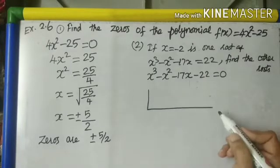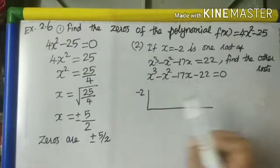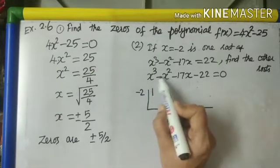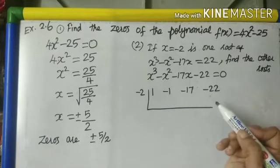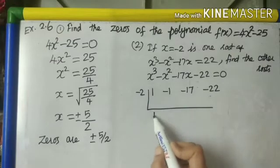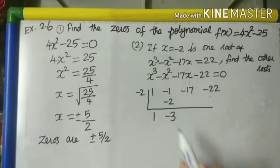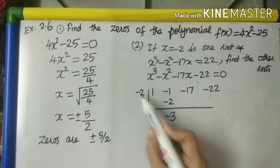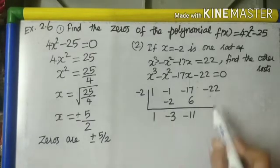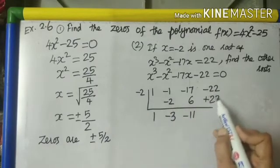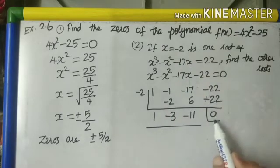How to do synthetic division: put the given root (-2) outside. The coefficients are 1, -1, -17, -22. Write 1. Then -2 × 1 = -2. Then -1 + (-2) = -3. Multiply: -2 × -3 = +6. Then -17 + 6 = -11. Multiply: -2 × -11 = 22. So -11 + 22 = 0, which confirms x = -2 is indeed a root.